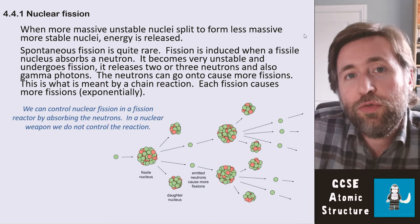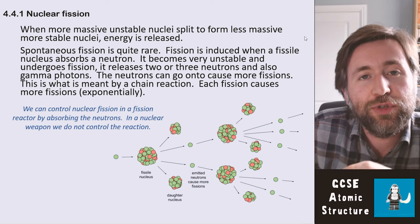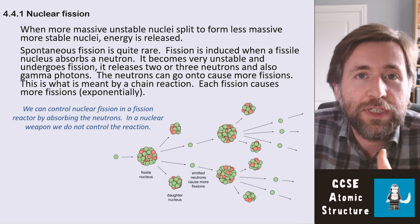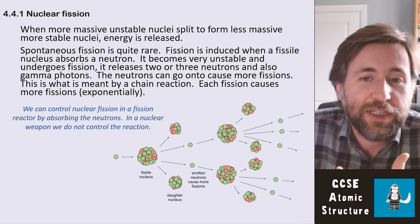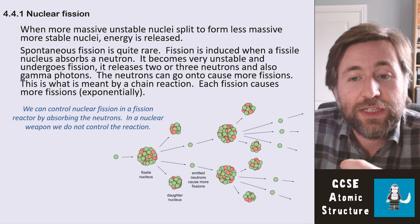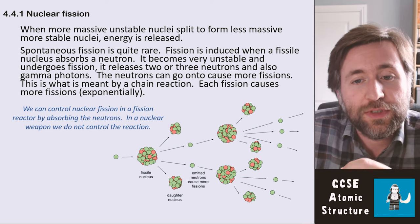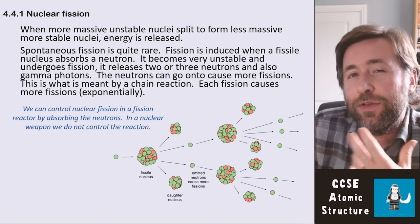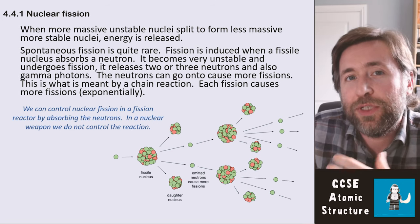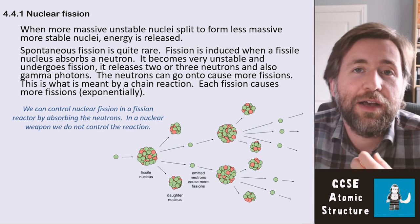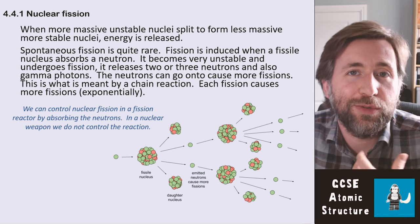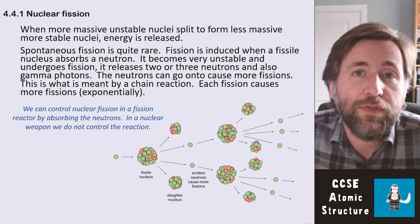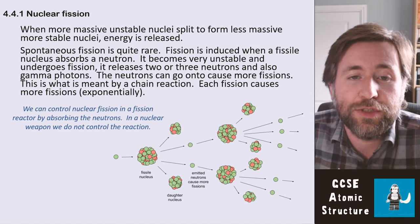We can control that chain reaction by capturing those neutrons. In a power station we use what are called control rods to absorb the neutrons and stop them causing more fissions. In a nuclear weapon we don't control the chain reaction — we allow it to occur at very high rates, giving out a lot of energy very quickly, and that's an explosion.